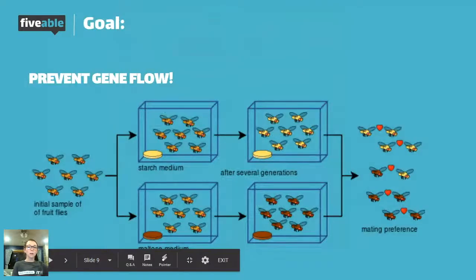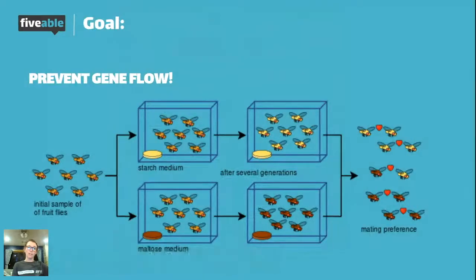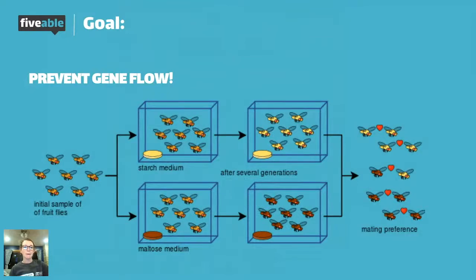So I'm going to go back to our goal here of preventing gene flow, because all of those barriers that I just talked about, and the different types of speciation that I'll mention in a second, have this same singular goal of preventing gene flow between populations, and that's how we get these different species.